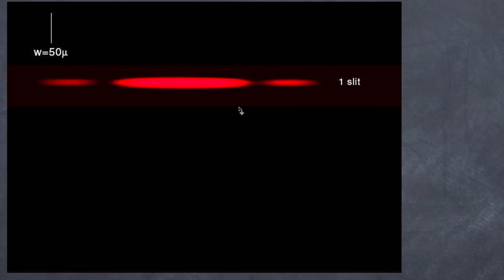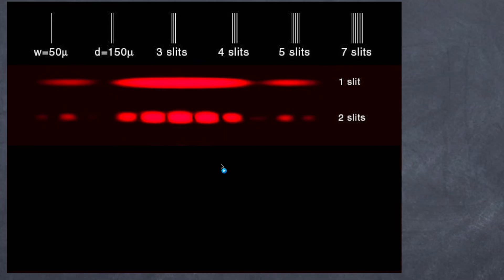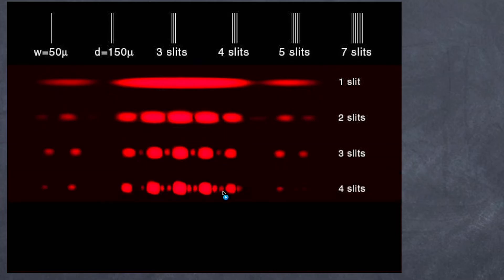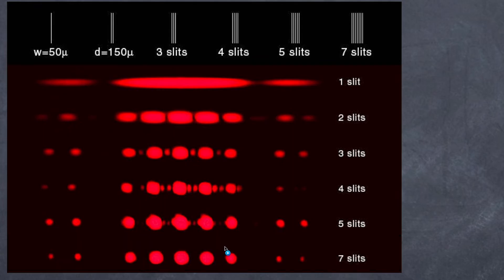So we're going to use that in a moment to determine the wavelength of our laser. So before we start, let's have a look at what happens to the interference patterns as we increase the number of slits. So we're going to start with a single slit and then we're going to move to 2, 3, 4, 5, and finally 7. I want to reveal these to you and I want you to see if you can identify two distinguishing features that are changing as we increase the number of slits. So there's 1, there's 2, there's 3, there's 4, 5, and 7. What do you notice?